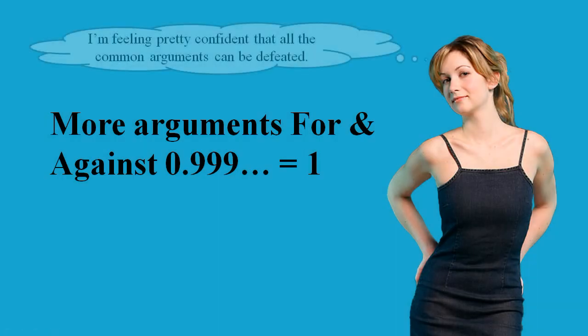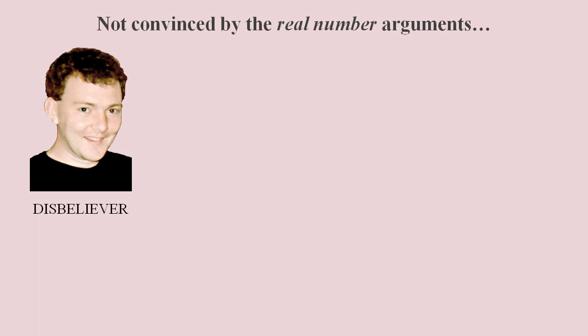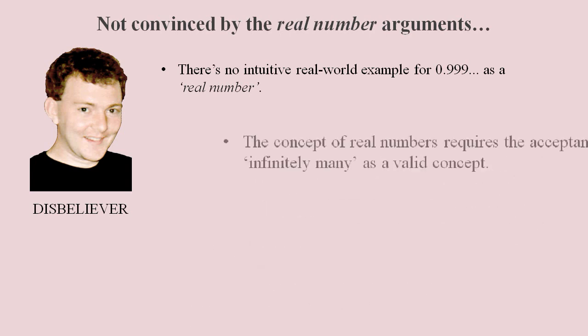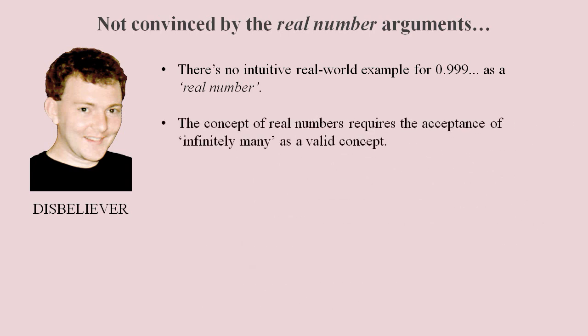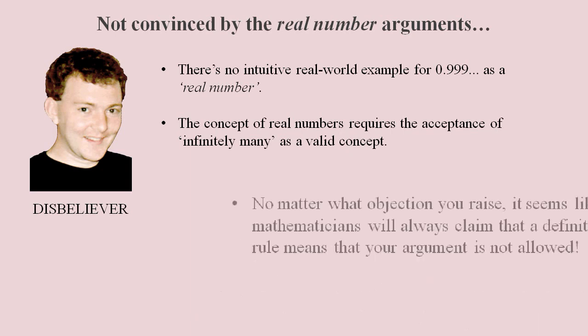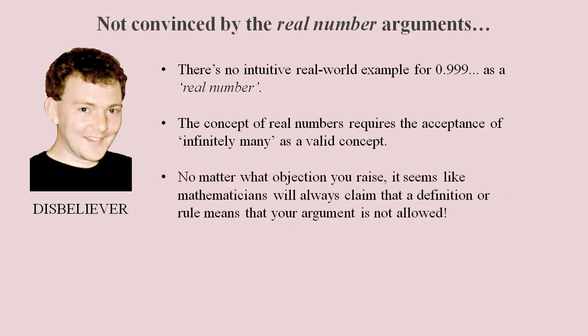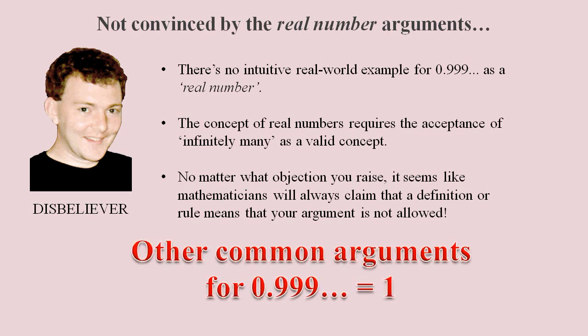Let's examine some popular arguments for 0.9 recurring equals 1. Speaking on behalf of disbelievers, real numbers are not intuitive. They rely on the concept of infinity, and any argument against real numbers must simply be declared to be invalid. So now let's examine some other arguments for 0.9 recurring equals 1.